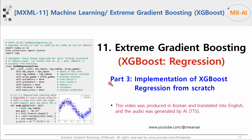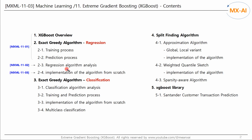This is part 3 of a series on XGBoost. In this video, we will implement XGBoost regression in code from scratch. This video was produced in Korean and translated into English, and the voice was generated through AI text-to-speech. In the last video, we analyzed the exact greedy algorithm for split-finding for XGBoost regression. In this video, we'll try to implement this algorithm in code from scratch.